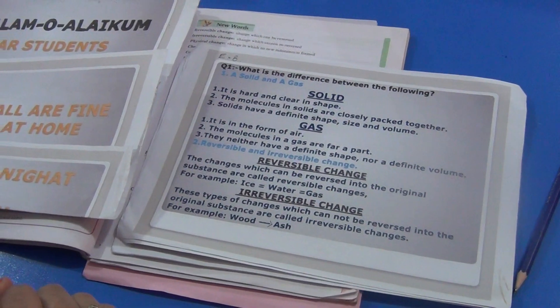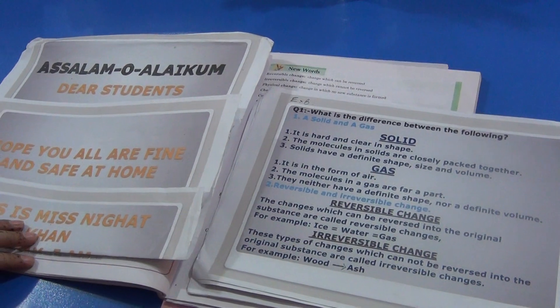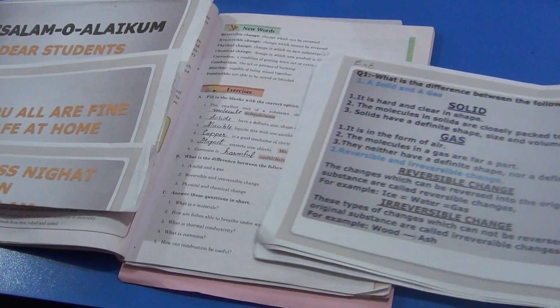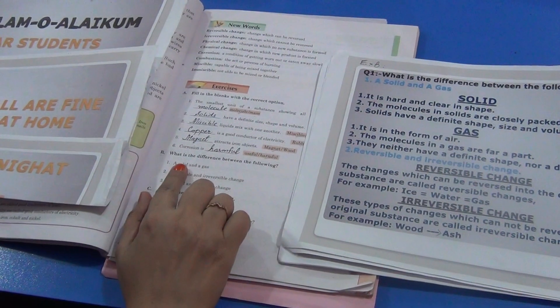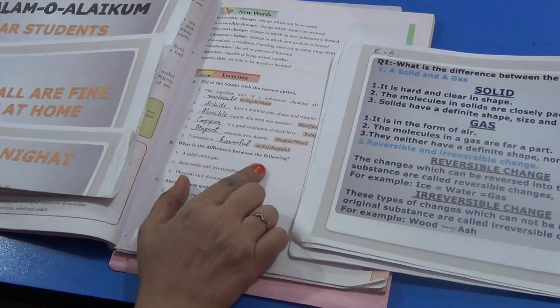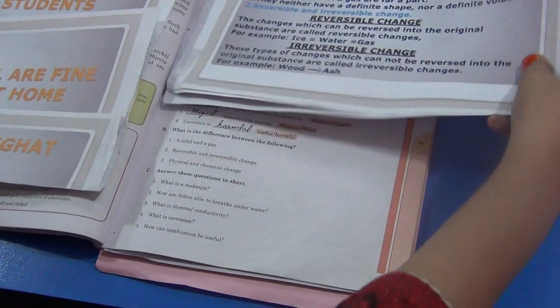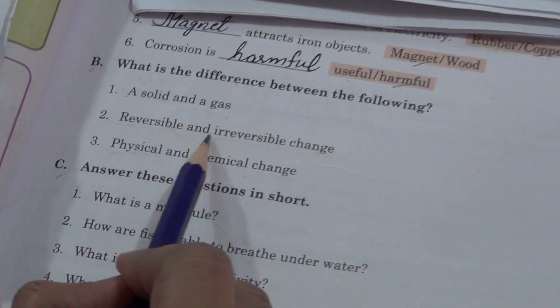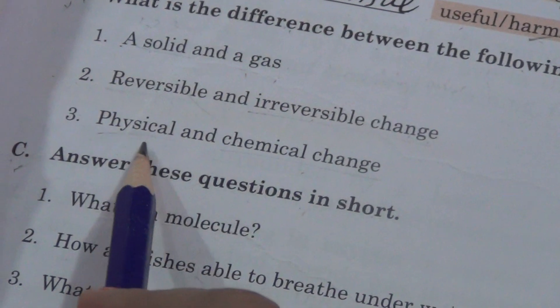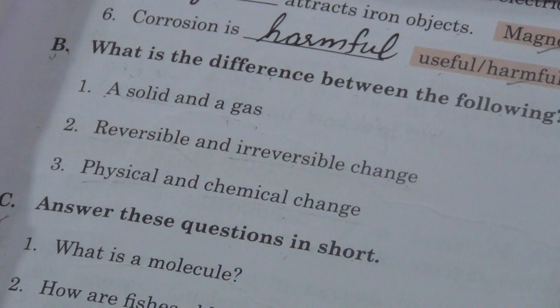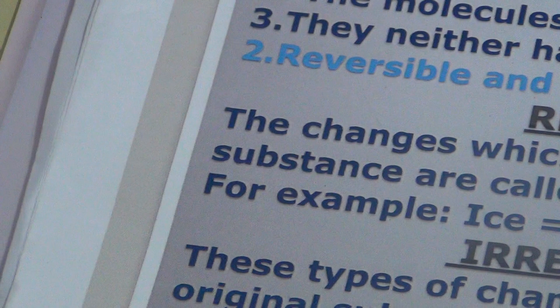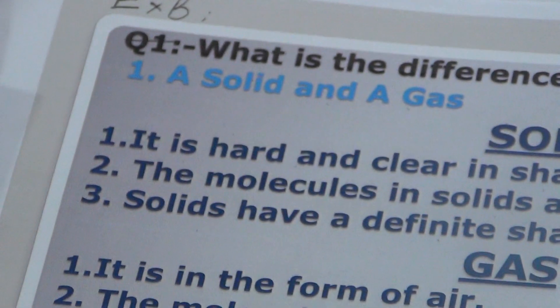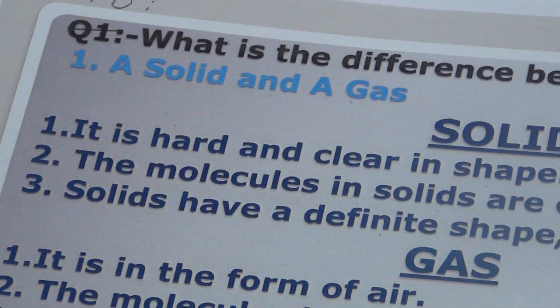Today I am giving you question answers and activities of chapter number 3. Chapter number 3 is Matter. Now you have exercise B. What is the difference between the following? You have differences here: a solid and a gas, reversible and irreversible change, physical and chemical change. You will do these question answers in copy. Questions you write from blue pointer and answers you write from pencil.